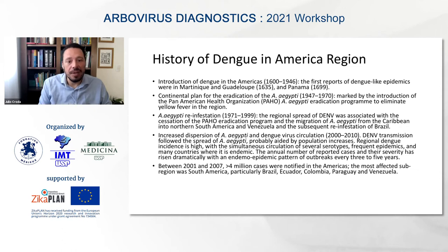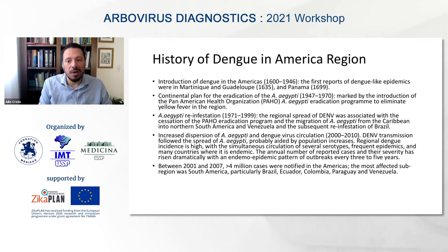The spread began with the Caribbean, then the north of South America — Venezuela — and dengue has had a huge impact in Brazil since the 1990s and 2000s. This increase in the dispersion of Aedes aegypti led Brazil to become a regional leader in the number of dengue cases and deaths, with all four serotypes circulating. Between 2001 and 2007, more than 4 million cases were notified in the Americas.